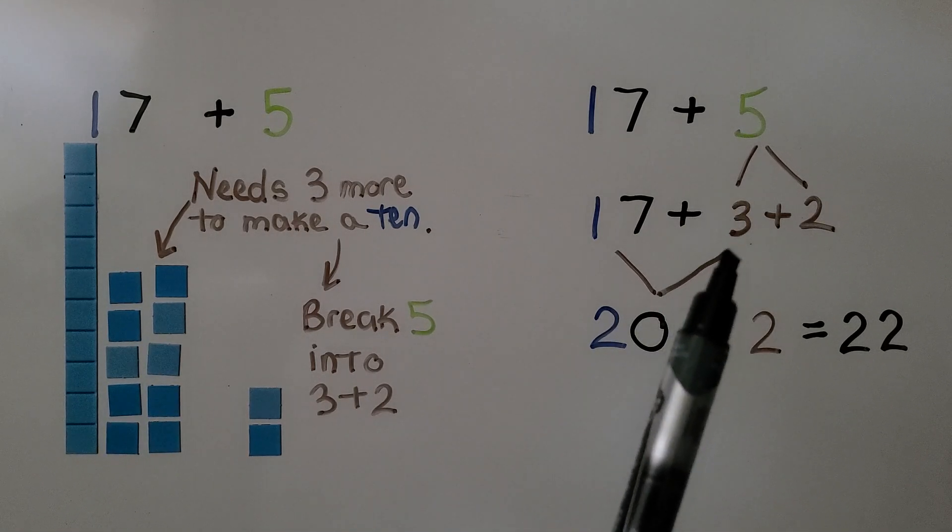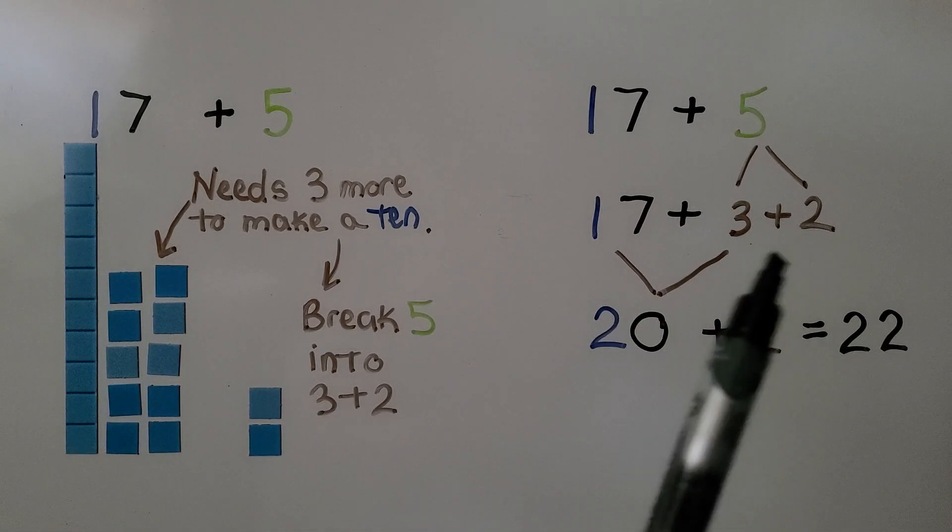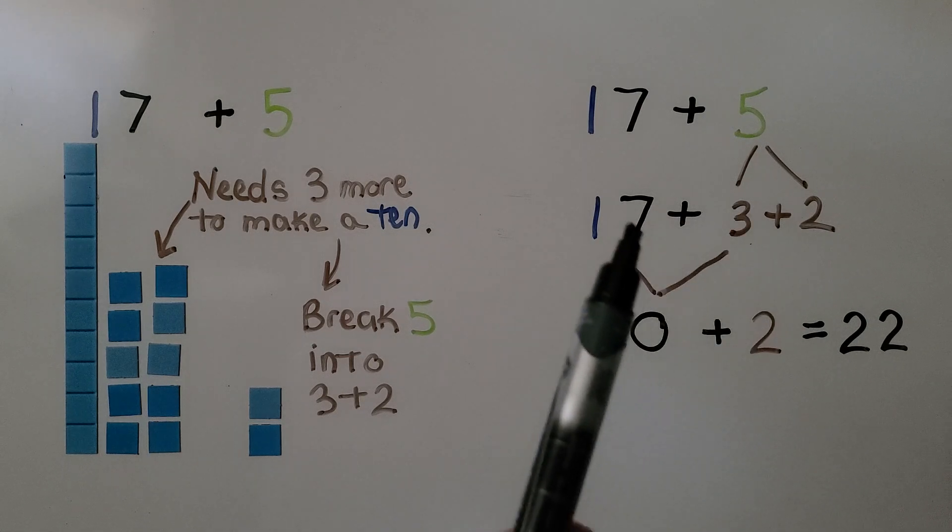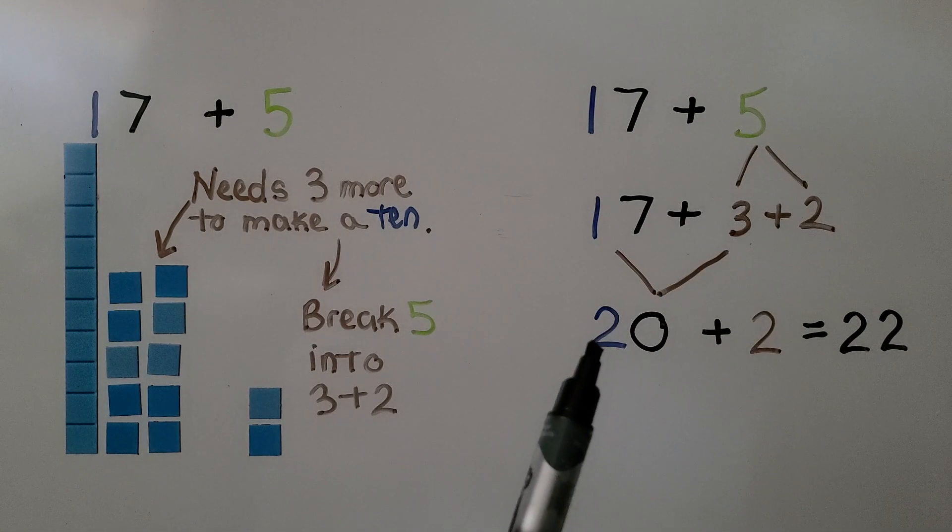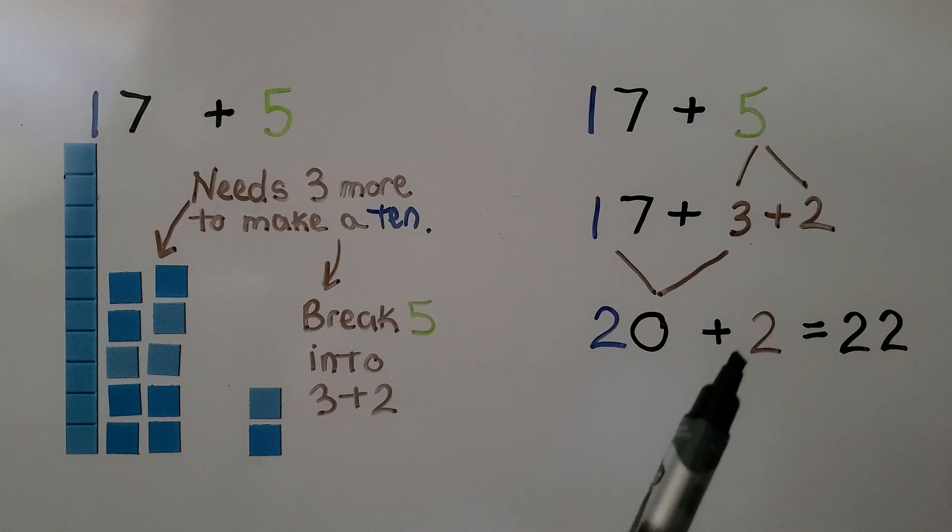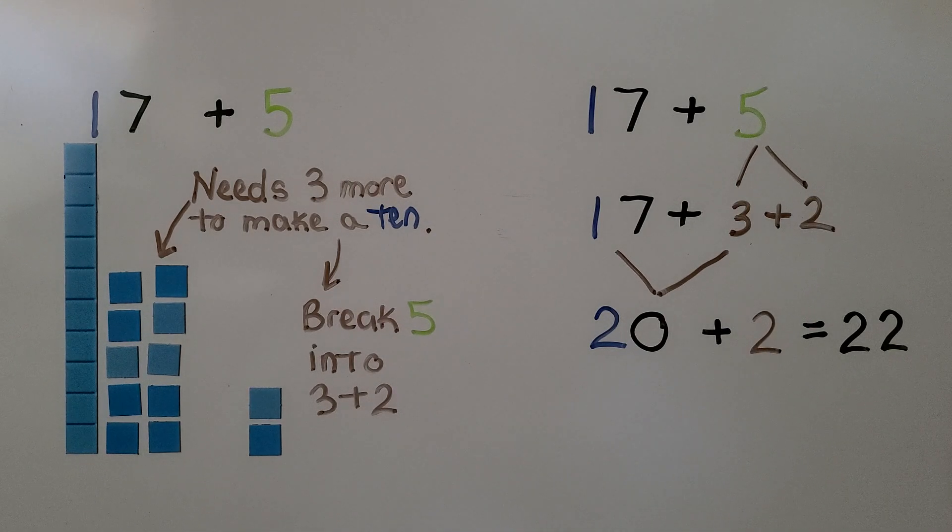We broke the 5 into a 3 plus a 2. We gave the 3 to the 7 to make a ten. Now we have 2 tens. We have these 2 ones still left over. We have 20 plus 2, which is equal to 22.